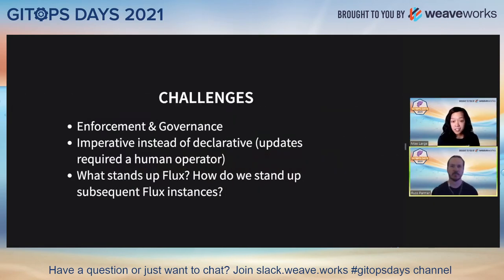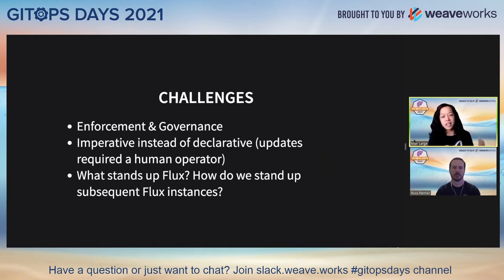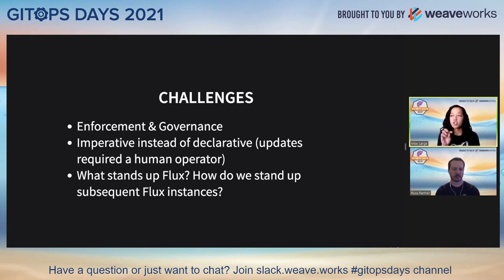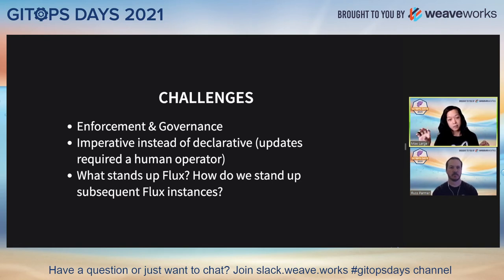In the spirit of continuous improvement, we took a step back and did a retrospective. What are the things we can improve upon? Number one is enforcement and governance — how do we make sure that the right behaviors are truly being practiced and adopted by our GitOps community at State Farm? The bottom line: how do we make sure that Flux can realize changes onto your target namespace?